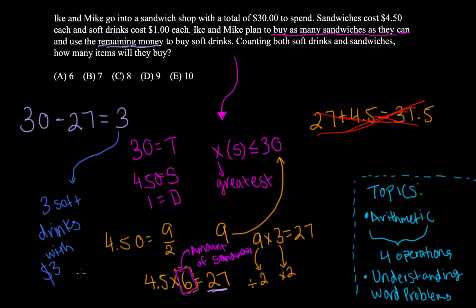And how we can say that is because we know that each soft drink costs $1, and 3 divided by 1 is equal to 3.